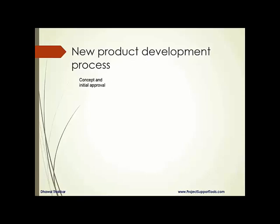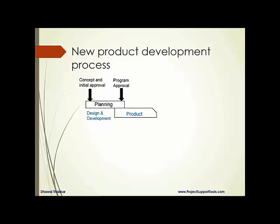We'll see what a new product development process is. First, you start with a concept — suppose I want to develop a new product. I propose this to management and get an initial approval. Once you start with the concept, you begin the planning work. Planning is one of the important phases of APQP. After your planning, you collect all requirements, justify why this project is needed, collect market requirements, and then get a program approval from management.